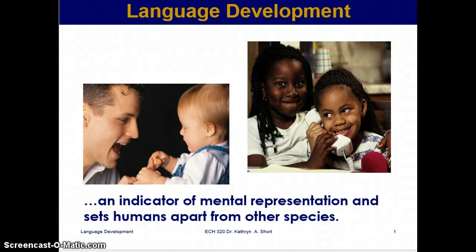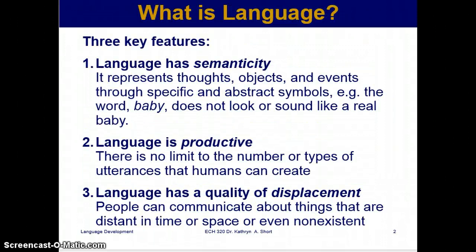This PowerPoint is for human development — language development. We're going to begin with language as an indicator of mental representation and what sets humans apart from other species. There are three key features of language. First, language has semanticity, which means it represents thoughts, objects, and events through specific and abstract symbols. For example, the word 'baby' does not look or sound like a real baby.